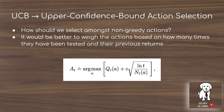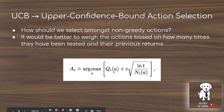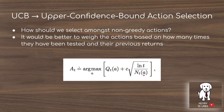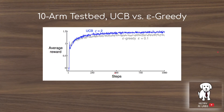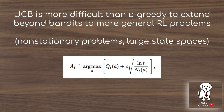UCB (Upper Confidence Bound) is another technique for balancing exploration and exploitation. Unlike epsilon greedy, which selects random actions uniformly, UCB weights actions based on uncertainty: Q(a) + c * sqrt(ln(t) / N(a)), where the c parameter balances the two terms and t / N(a) measures how uncertain we are about the action's value. UCB with c=2 slightly outperforms epsilon greedy with epsilon=0.1, but UCB is harder to extend beyond bandits to general RL problems due to non-stationary reward distributions and large state spaces.